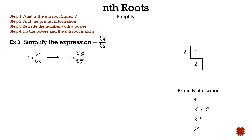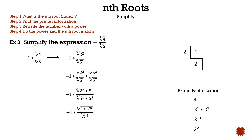Since we have a root in the denominator, we have to rationalize it. We look at the index, which is three. In the denominator we have five to the first, so we already have one and we need two more. Let's multiply the top and bottom by the cube root of five squared. Now let's combine the roots in the numerator and denominator since we have the same index. Two squared is four and five squared is 25, and four times 25 is 100.